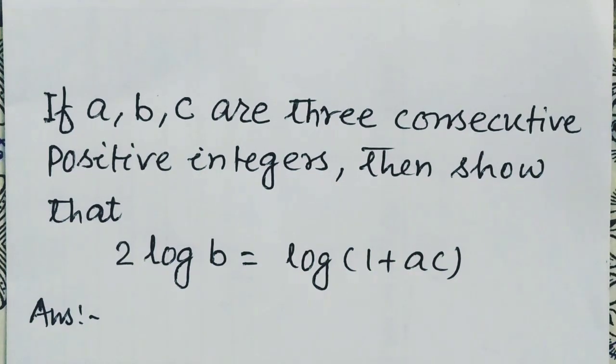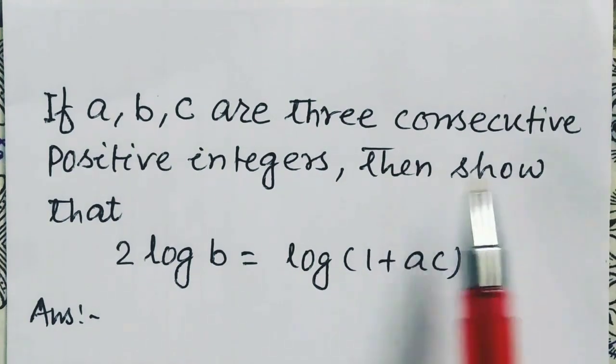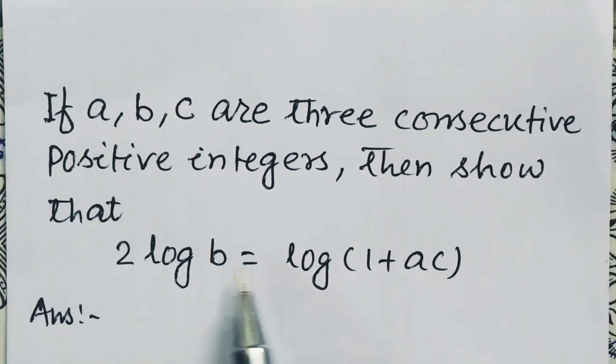If A, B, C are three consecutive positive integers, then show that 2 log B equals log(1 + AC).